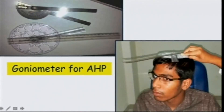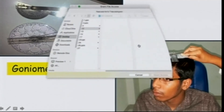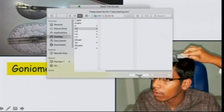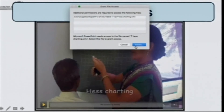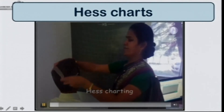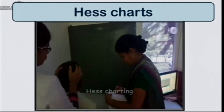The next important thing is to measure abnormal head posture. We could use a goniometer — in our clinic, we made one using two scales mounted on a 360-degree protractor — to measure both the head turn and chin up or chin down posture. The HES charting helps differentiate incomitant squint from paralytic or restrictive strabismus and also records the amount of extraocular motility.